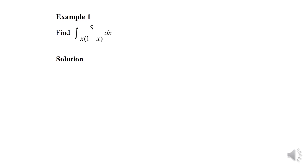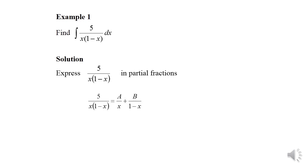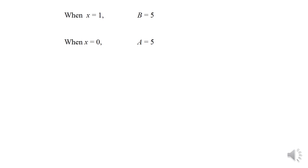Example 1: Find the integration of 5/[x(1−x)] dx. First, we express it into partial fraction form: a/x plus b/(1−x). We then get 5 = a(1−x) + bx. Substituting x = 1 gives b = 5, and substituting x = 0 gives a = 5.